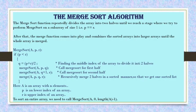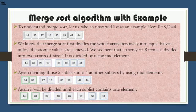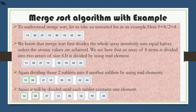Now let us discuss merge sort with an example. We take an unsorted list of eight elements: 14, 33, 27, 10, 35, 19, 42, and 44. We find the mid index: (0 + 8) / 2 = 4. We divide it into two sub-lists: the first is [14, 33, 27, 10] and the second is [35, 19, 42, 44]. These two sub-lists are then divided further until we get one element in each sub-list.